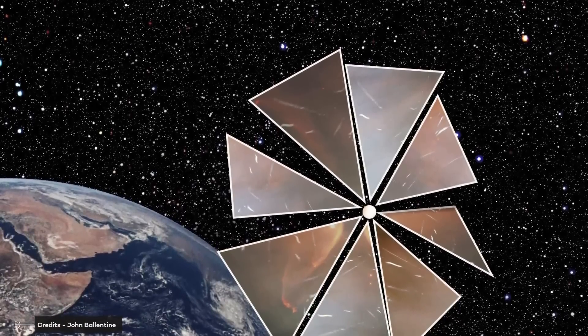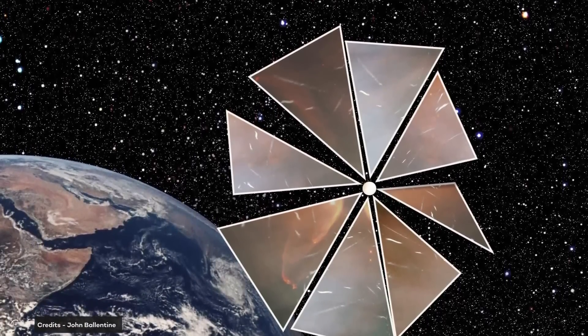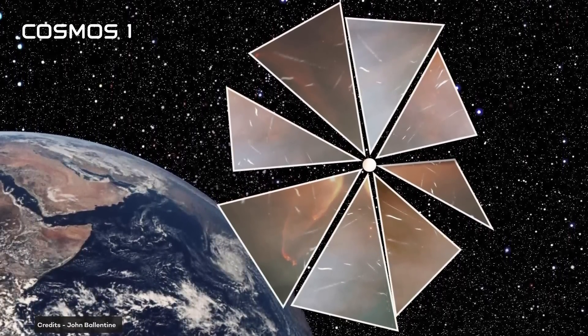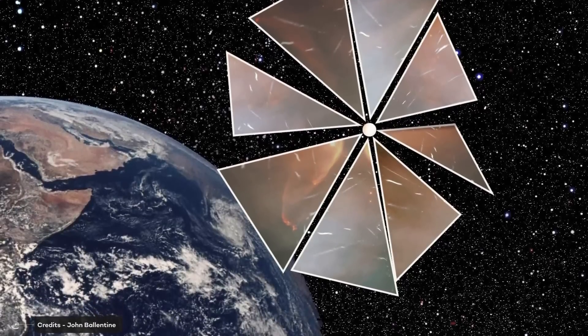The Planetary Society's first crowdfunded solar sail mission, Cosmos-1, was also launched in 2005, but it failed to reach orbit.